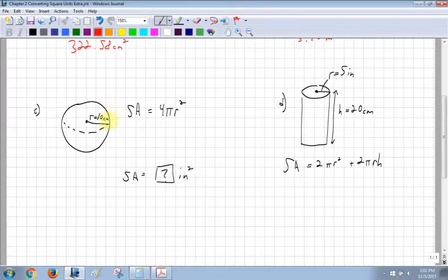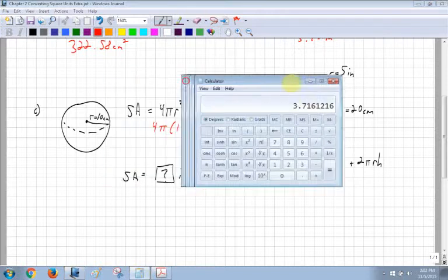So you have a choice. You can either convert before or you can convert after. If you're going to convert before, then you don't have to worry about multiplying by the conversion factor twice. Because you're going to be dealing with that when you square the radius. So if I was to find this in centimeters first, I would just go 4 pi times 10 squared. So I would work that all out.